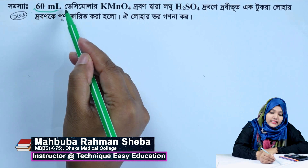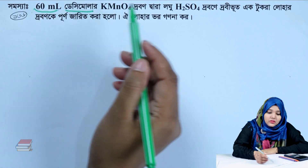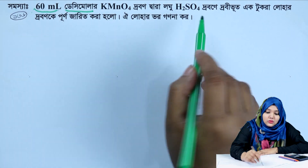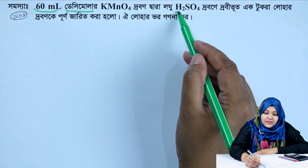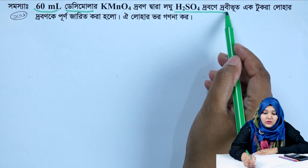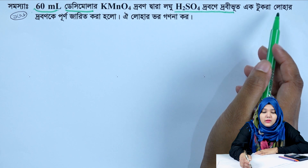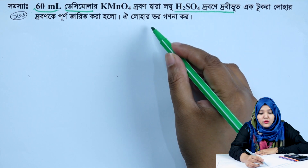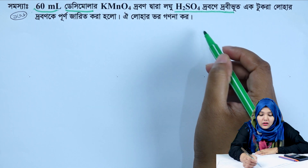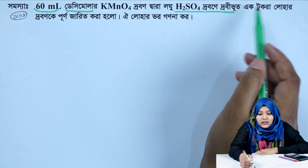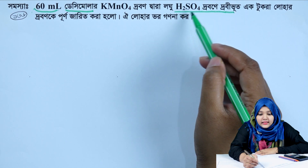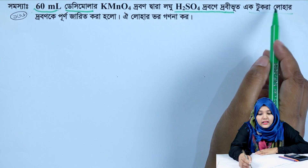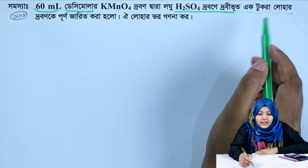We have 60 millilitres of decimolar potassium permanganate solution. Iron was dissolved in dilute sulfuric acid solution — that is, iron and dilute sulfuric acid were present here. The iron was dissolved and the mass of iron dissolved was determined.